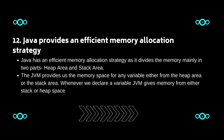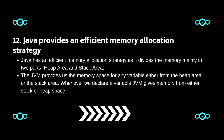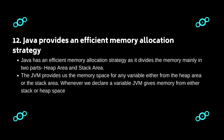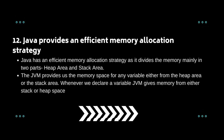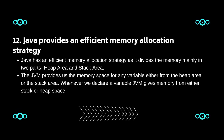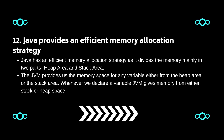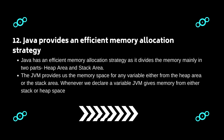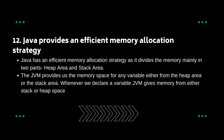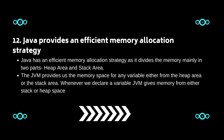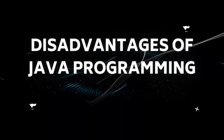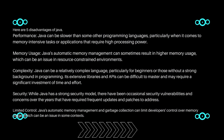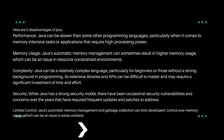Twelve: Java provides an efficient memory allocation strategy. Java divides memory mainly into two parts: heap area and stack area. The JVM provides memory space for any variable from either the heap or stack area. Whenever we declare a variable, JVM gives memory from either the stack or heap space.